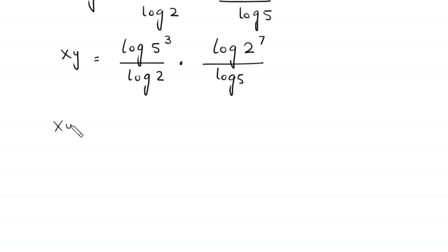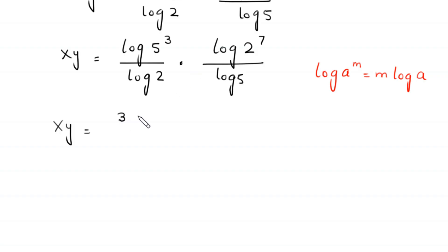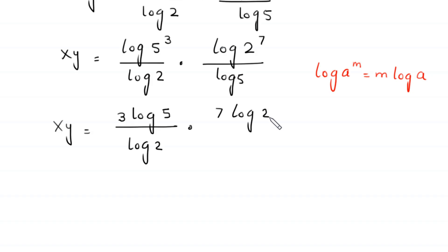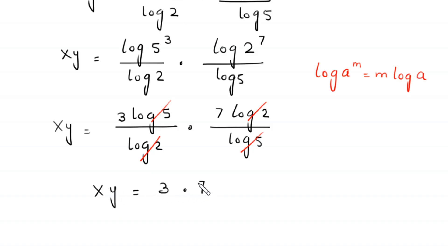Next, x times y equals — by using the log property log of a to the power m is equal to m times log of a — log of 5 cubed becomes 3 times log of 5, divided by log of 2, times log of 2 to the power 7 which becomes 7 times log of 2, divided by log of 5. Now log of 5 cancels with log of 5, and log of 2 cancels with log of 2, leaving x times y equal to 3 times 7, so x times y equals 21.